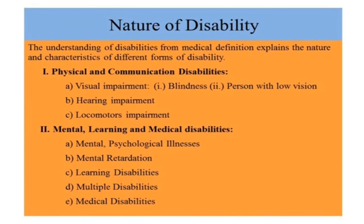Now we will see the nature of disability. Understanding disabilities from a medical definition explains the nature and characteristics of different forms of disability. There are two types of disabilities: physical and communication disabilities, and mental, learning, and medical disabilities. The first category includes visual impairment, blindness, low vision, hearing impairment, and locomotor impairment. The second category includes mental and psychological illness, mental retardation, learning disability, multiple disability, and medical disabilities.